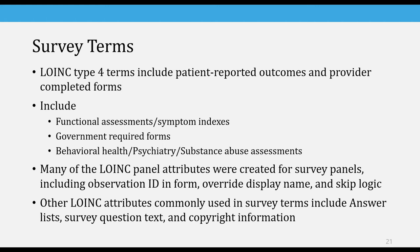Survey terms is our fastest-growing area currently. These include both patient-reported outcomes as well as measures completed or observed by providers. We have a structure for LOINC panels used in all four class types. In lab, it's mainly used for batteries of tests like a CBC where you have a group of tests done together. But in the survey space, the panel structure has really evolved, and we've added a lot of different attributes, including skip logic, override display names, and specialized answer lists — things that are only found in these types of assessments.